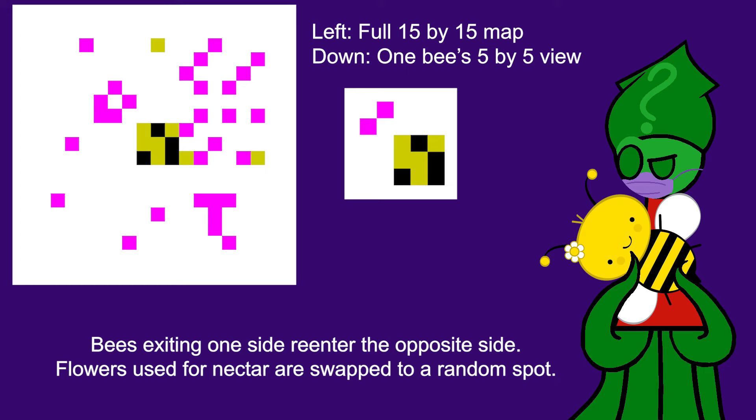Bees are always choosing actions that do nothing or move around. If they move to a flower, they collect some nectar. If they move to the hive, they deposit that nectar. Bees eventually die, but new bees are born whenever enough nectar is collected. These bees are just moving randomly.